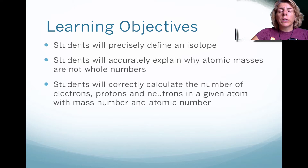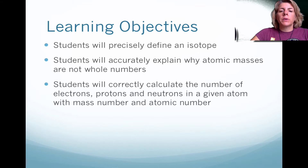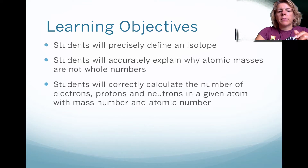In this video, we're going to look at what is an isotope. We're going to explain accurately why atomic masses are not whole numbers. And then lastly, we're going to calculate the number of electrons, protons, or neutrons for a given atom, depending on mass number and atomic number.